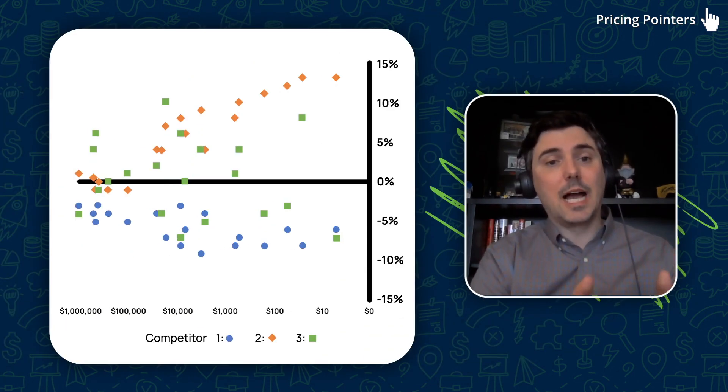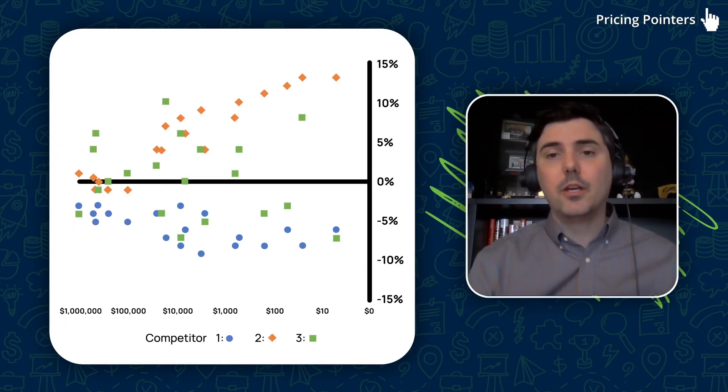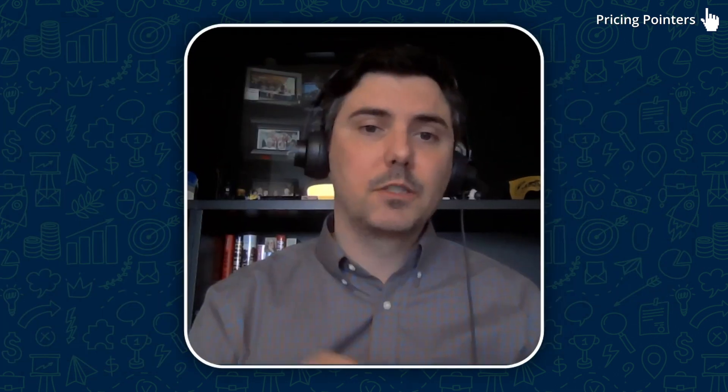The audiences I present to read left to right, and the most important data on the chart should be on the left — meaning the SKUs with the highest sales should be on the left. Do whatever works for your audience.